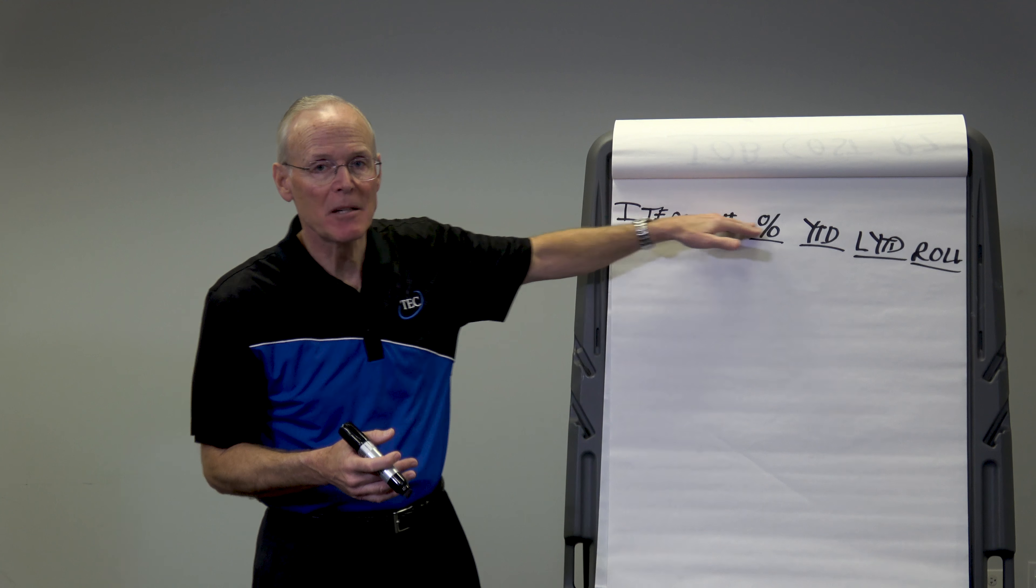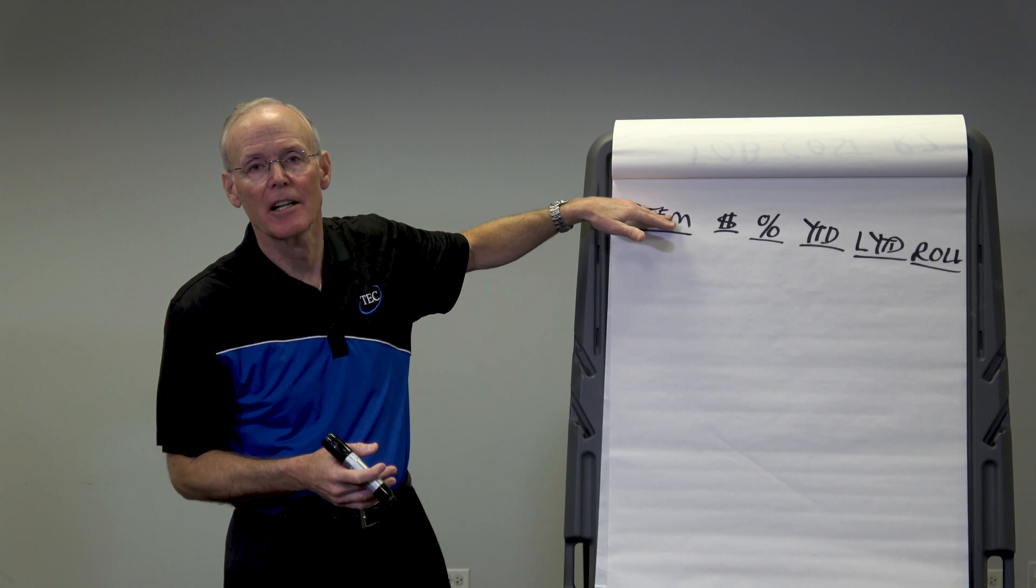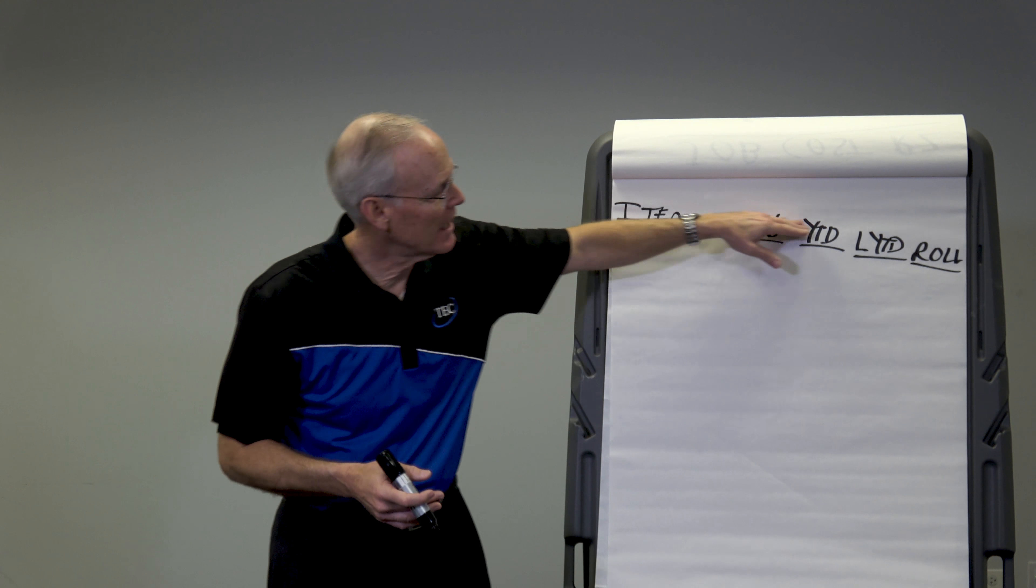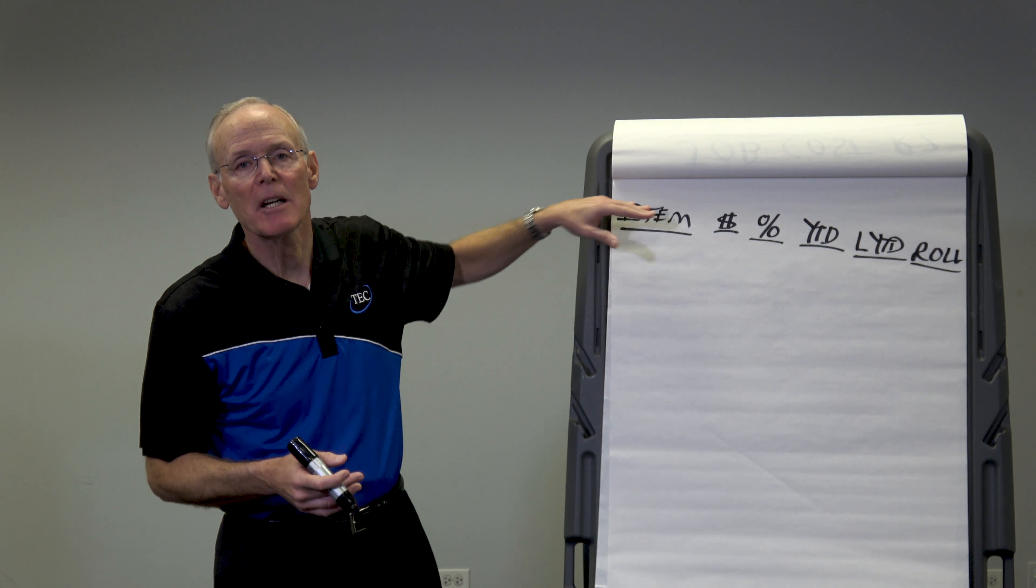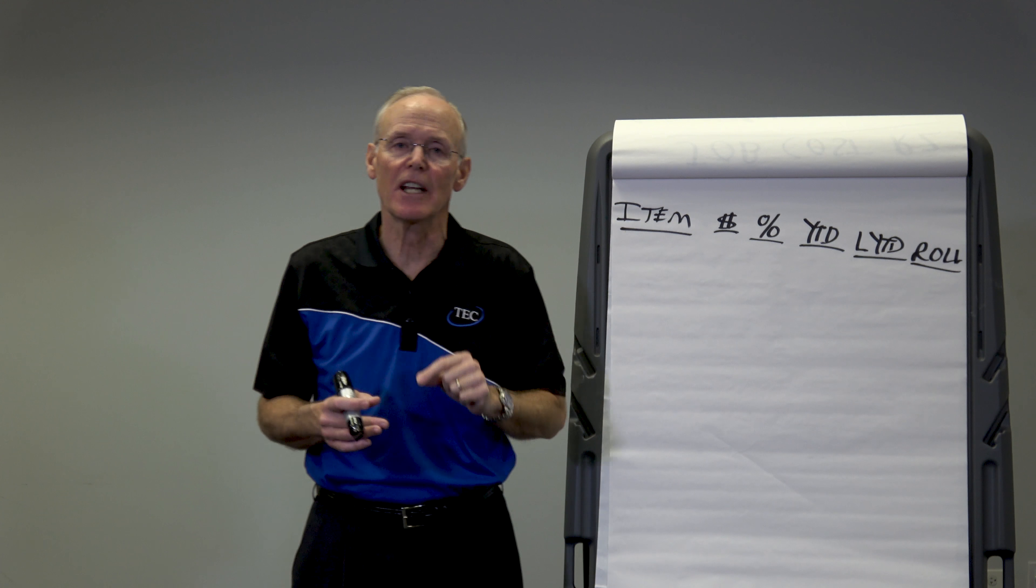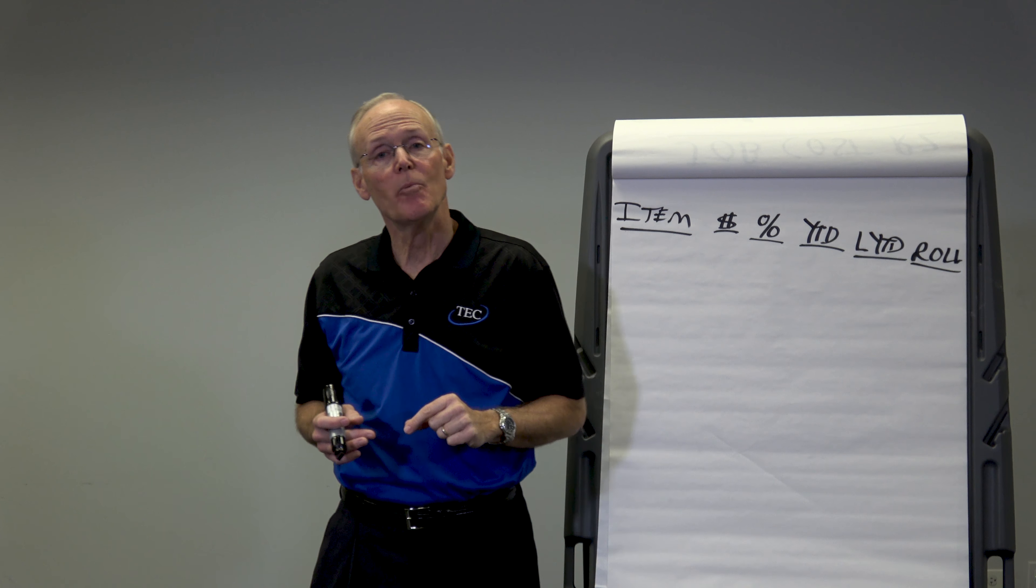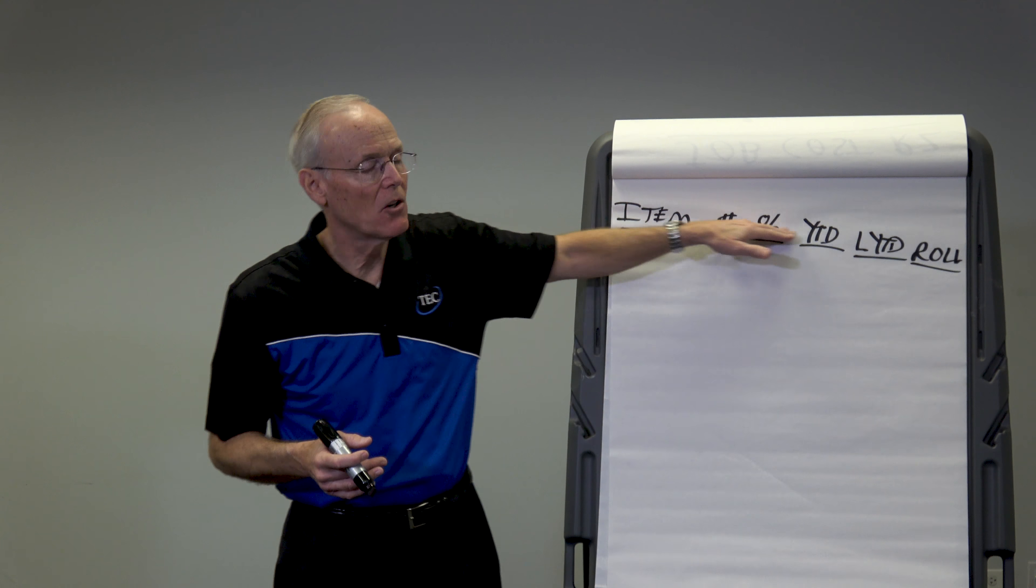So these are the columns, the minimum columns I have on an income statement. These are the columns the big businesses have on an income statement. So to mimic those big businesses, those successful HVAC contractors who become very successful, you've got to know all these things.